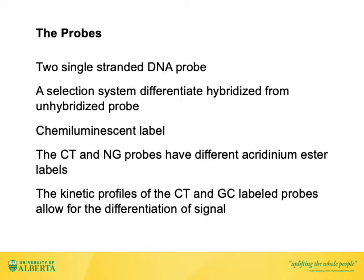As well as having two enzymes and three oligos, the chlamydia and gonorrhea assay uses two single-stranded DNA probes, one for each target. The probes bind the target RNA in between the capture oligo and the T7 oligo. Each probe is labeled with a different chemiluminescent ester and has a different kinetic profile, which allows differentiation of targets. There is a proprietary selection system that differentiates between bound and unbound probe.